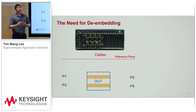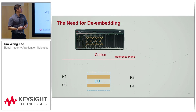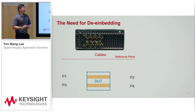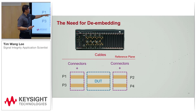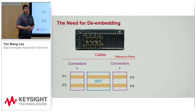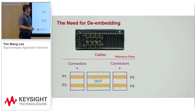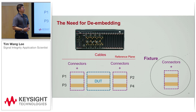Next we have to do some de-embedding, because after Mike's measurements we are accessing the device on the test with connectors and some traces — whether you like it or not, it has to be done this way. From cables to probes to the device under test there is some connection, and we call that the fixture.